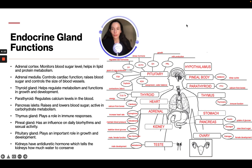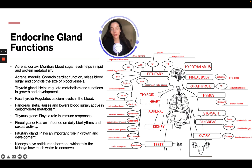Now the endocrine gland functions. This diagram shows the body with all the different endocrine glands: testes, ovaries, pancreas, adrenals, thyroid, pituitary, hypothalamus, pineal, parathyroid, and thymus.